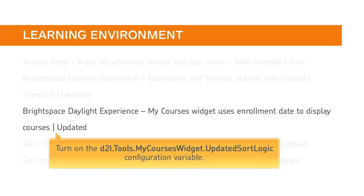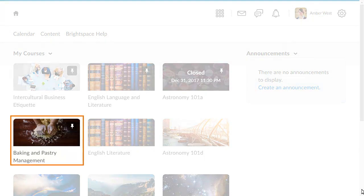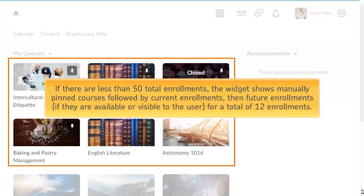You can turn on the D2L Tools MyCoursesWidget UpdatedSortLogic configuration variable to opt-in to the new sort display logic for the MyCourses widget. Pinned courses now have a visible pin icon on the course title. Newly pinned courses are added to the bottom of the pinned list. If there are less than 50 total enrollments, the widget shows manually pinned courses, followed by current enrollments, then future enrollments if they are available or visible to the user, for a total of 12 enrollments.